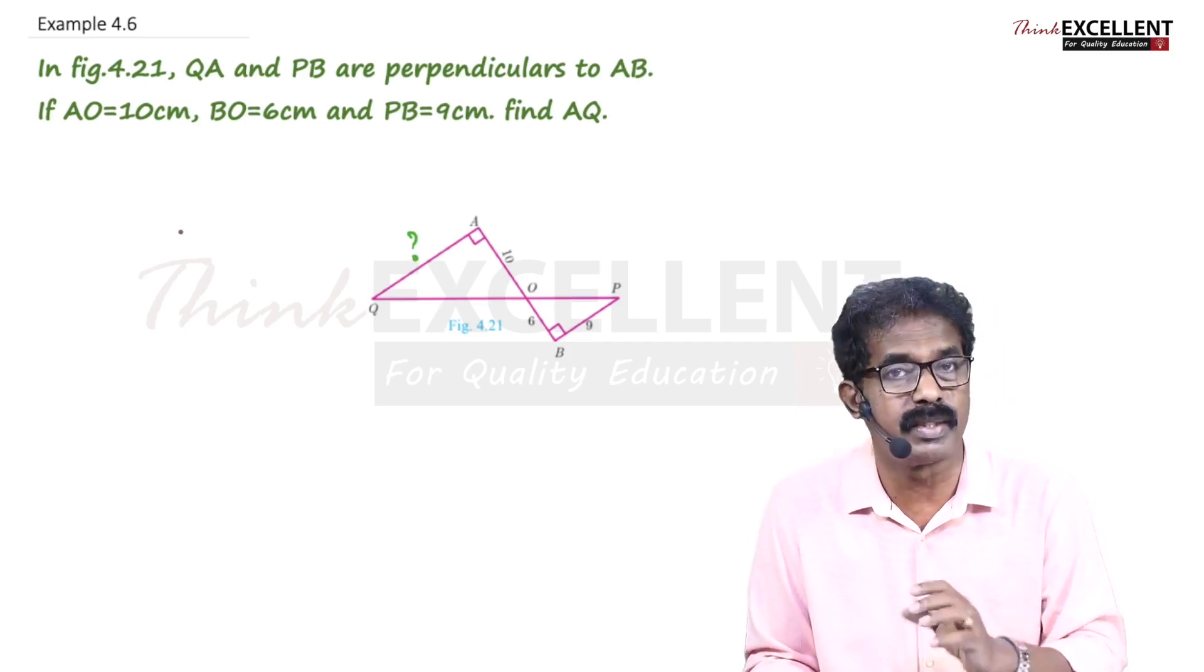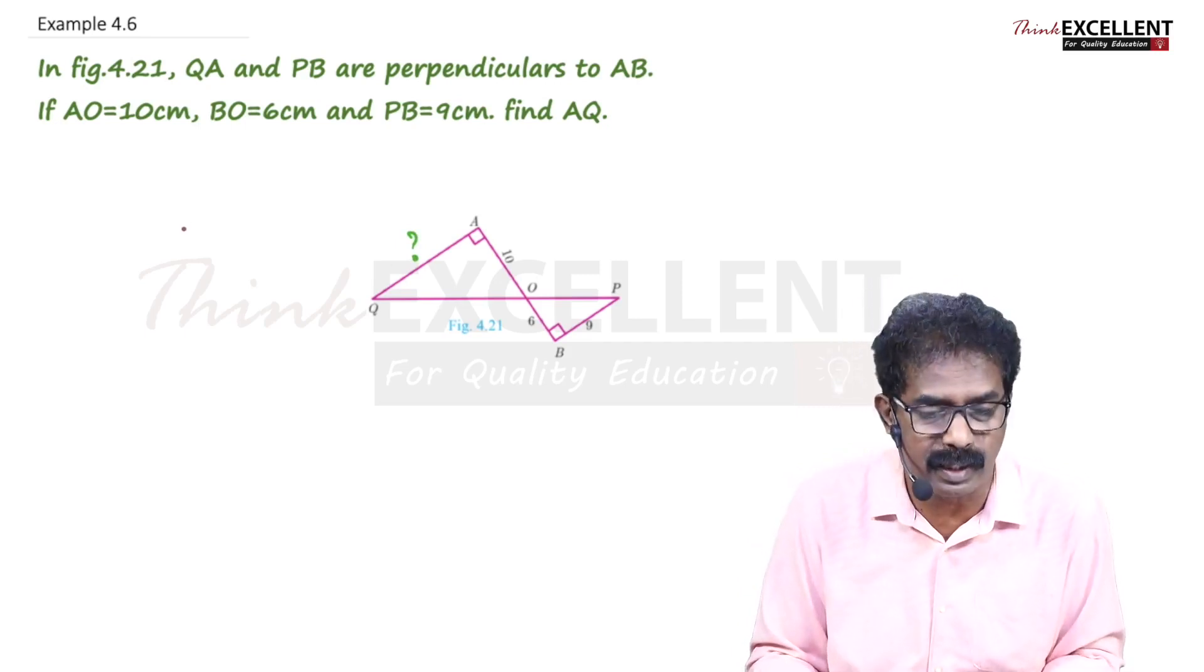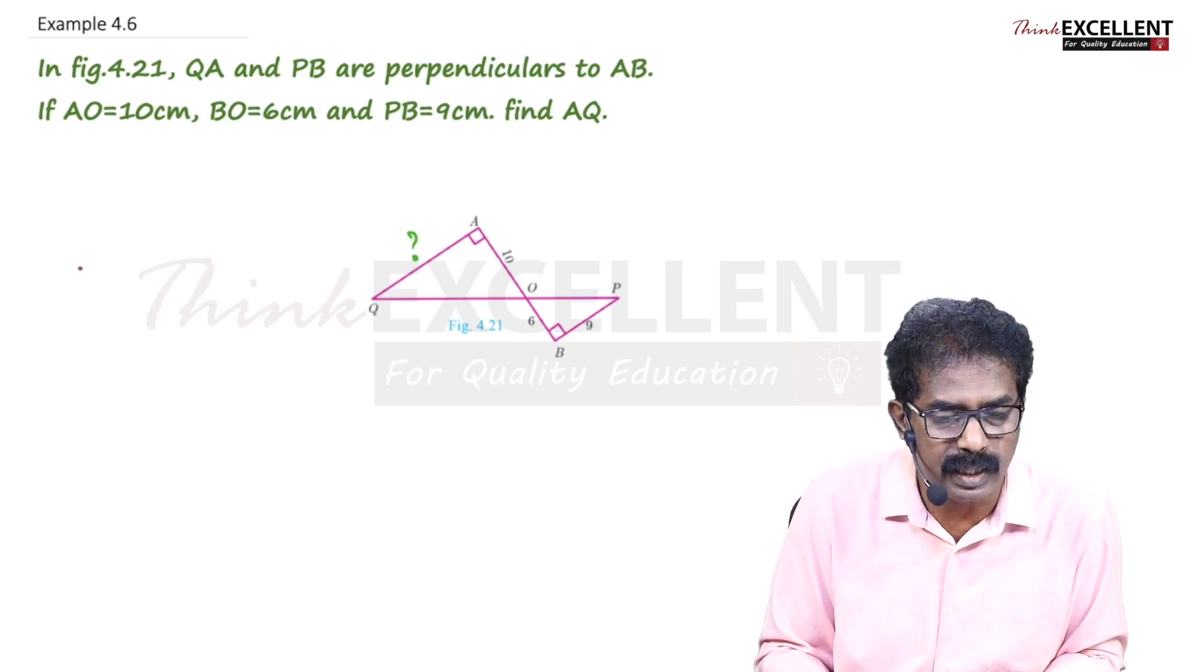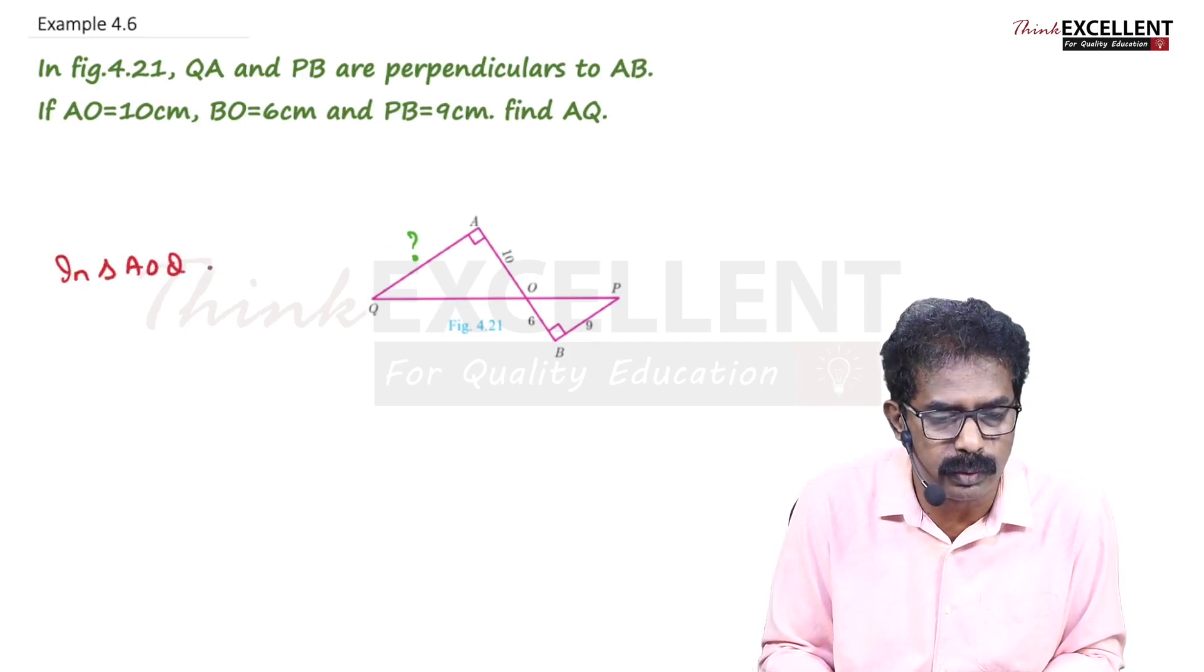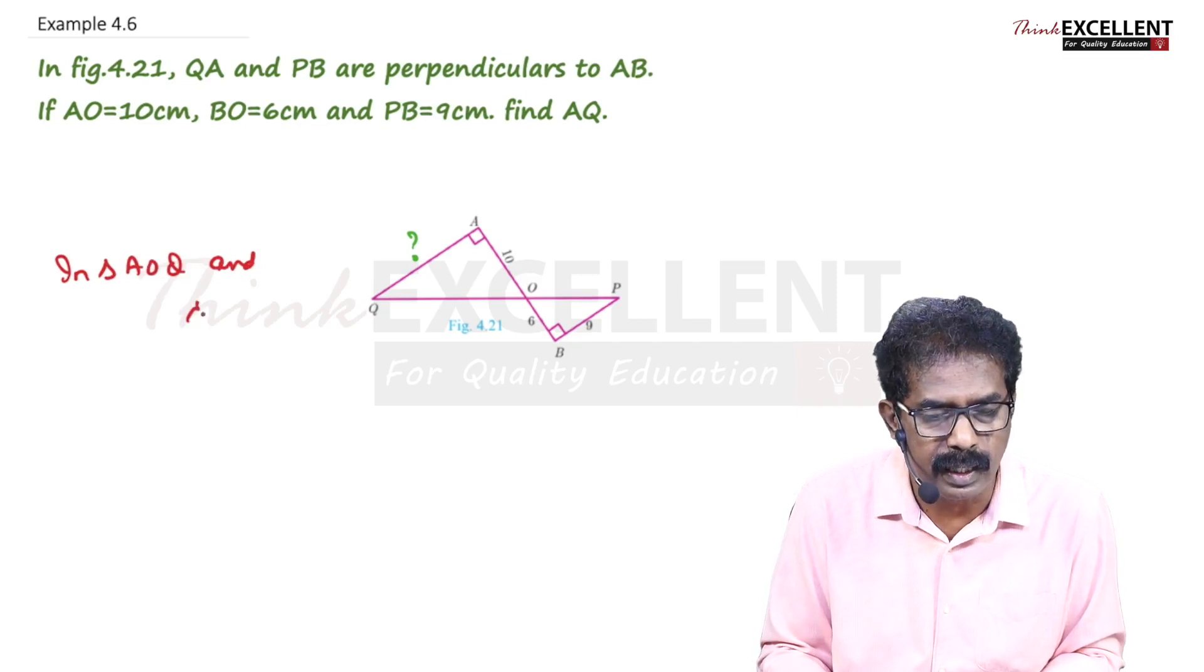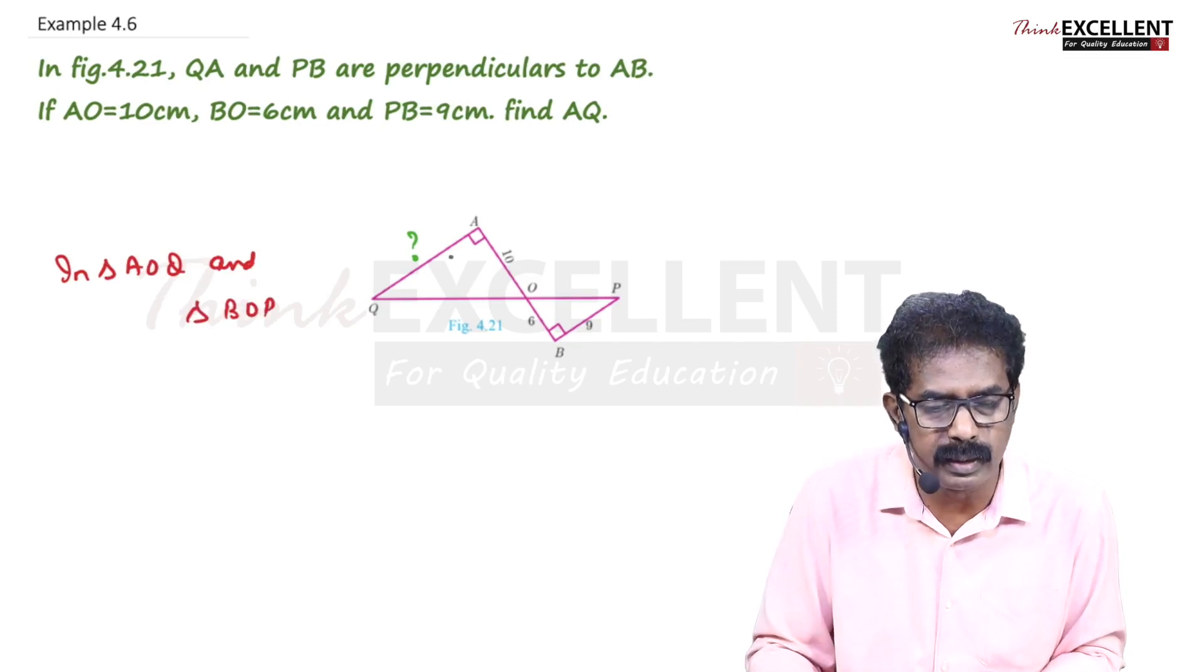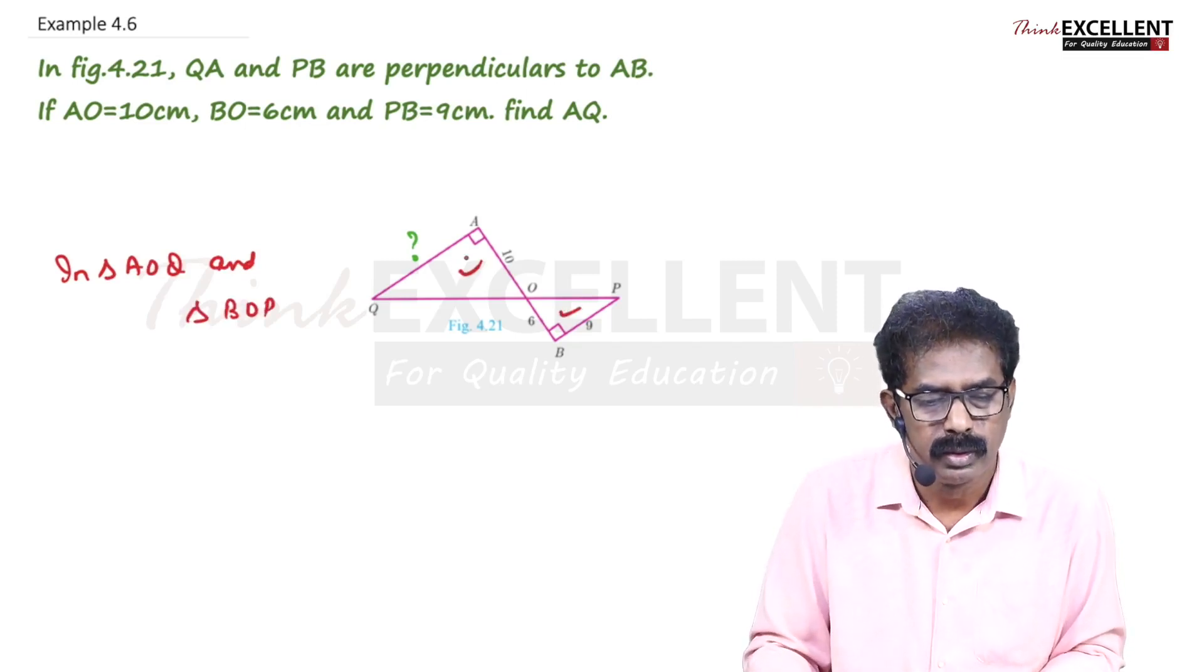So two triangles you can see here. We try to prove that two triangles are similar. One angle we know. So we consider two triangles: triangle AOQ and triangle BOP. In these two triangles, one angle is...